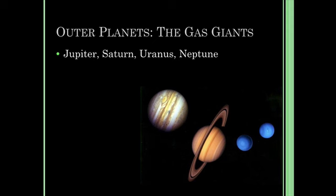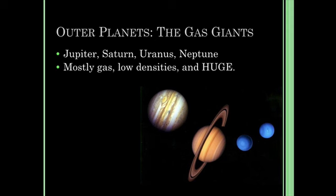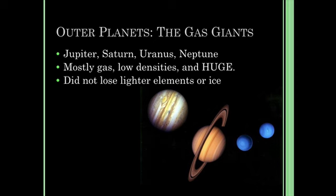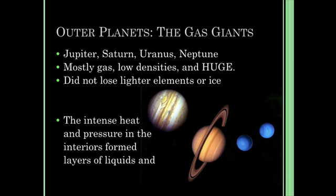Our outer planets are our gas giants — Jupiter, Saturn, Uranus, and Neptune. They are mostly gas, have low densities, and they're very, very large. They did not lose their lighter elements or ice; they're too far away for the solar wind to push away their lighter elements. They also had large mass among themselves, so they swept up all of those lighter elements as they orbit the proto-sun. There's lots of heat and pressure in them, and that forms layers of liquids and gases. We can see some of those especially in pictures of Jupiter and Saturn, which are made up of lots of gas and liquids as you get closer to their centers.